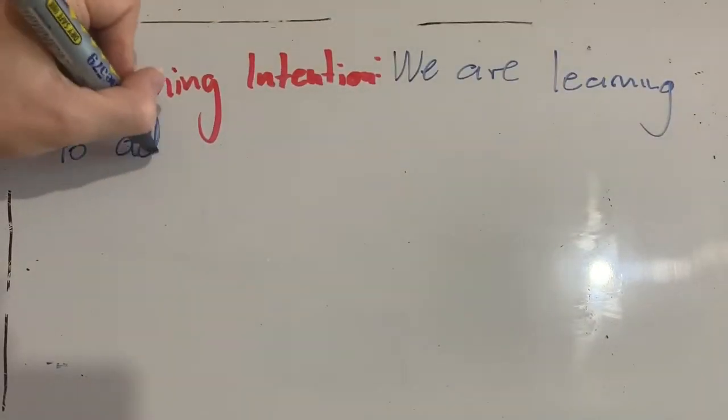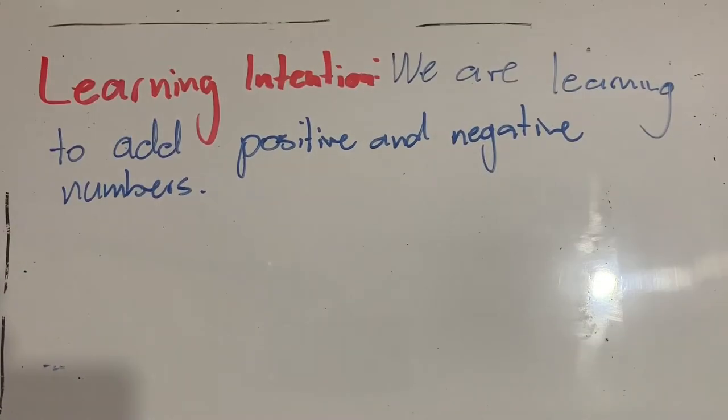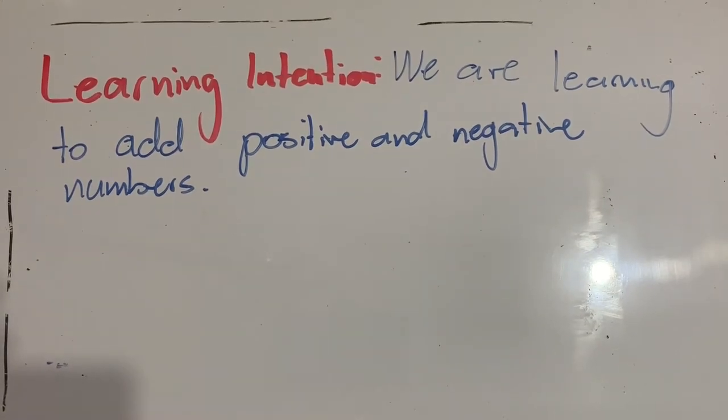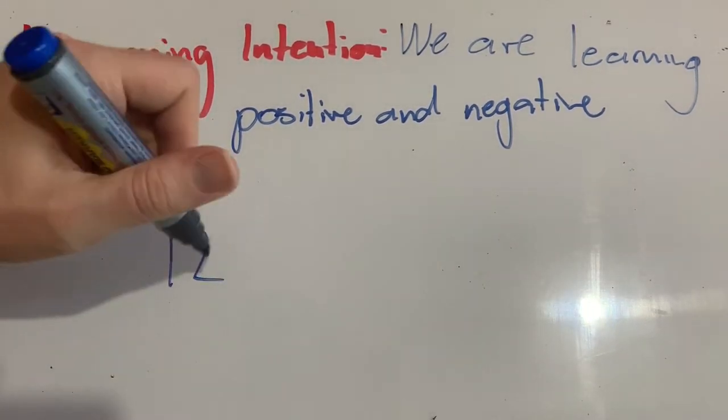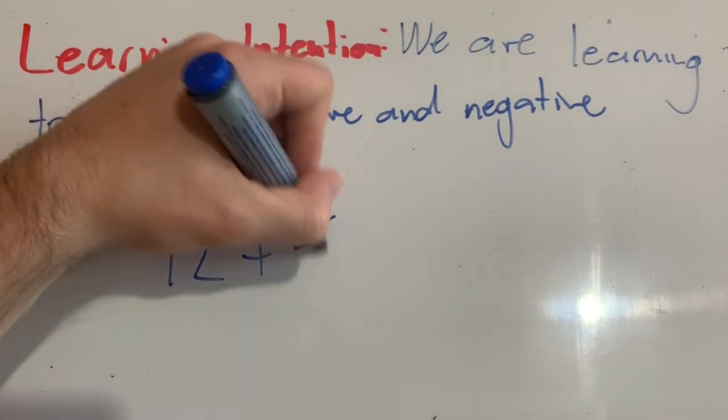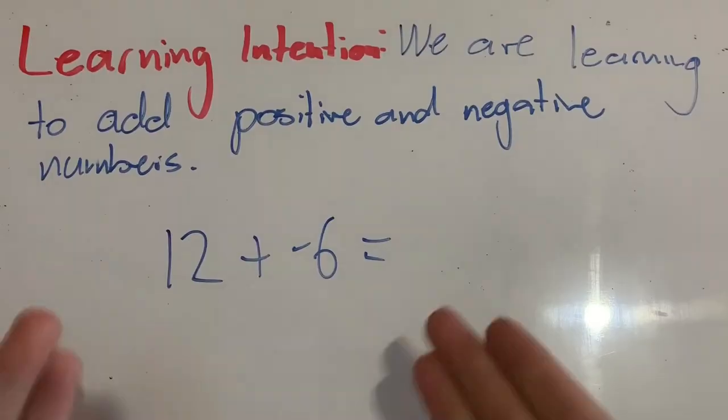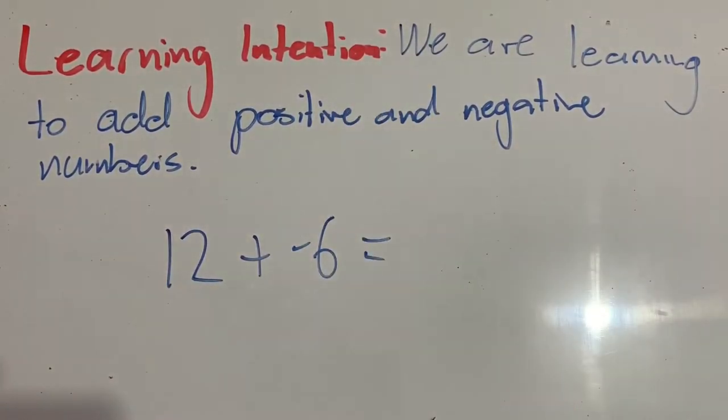Our learning intention for today is that we are learning to add positive and negative numbers. There may be times when we have to add positive and negative numbers together. You might see something like 12 plus negative 6. But how do we solve this problem? That's a good question. That's what we're going to look at today. Before we do that, we have some rules that we need to know about adding numbers together.